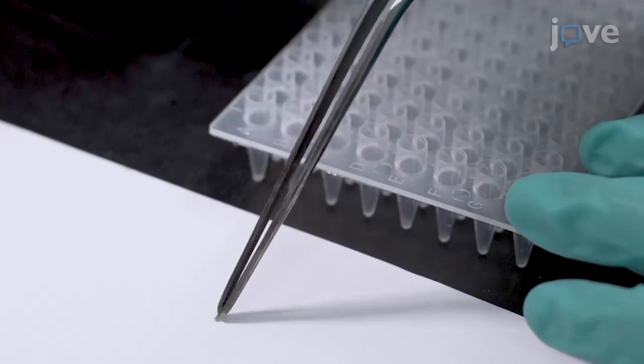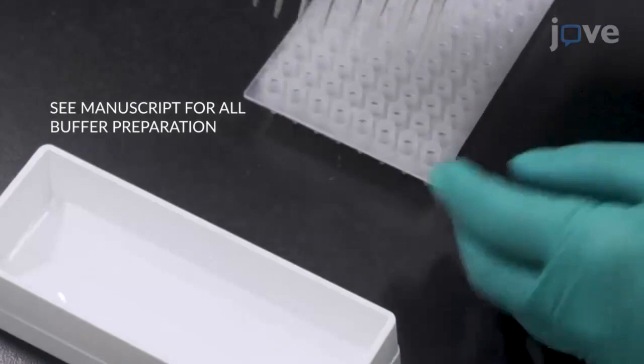To begin, place four leaf disks into each well of a 96-well PCR plate. Add 50 milliliters of buffer A solution into each well.